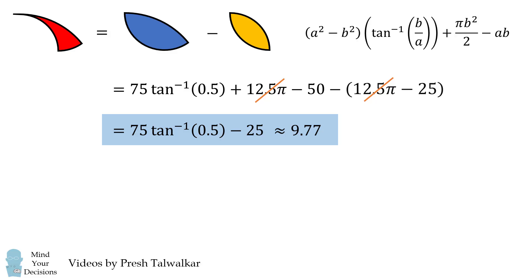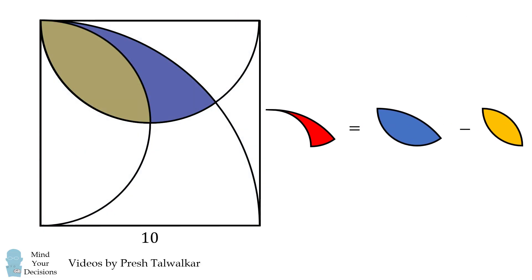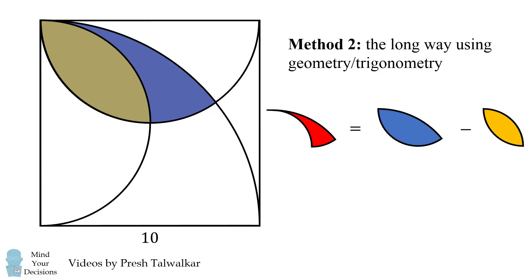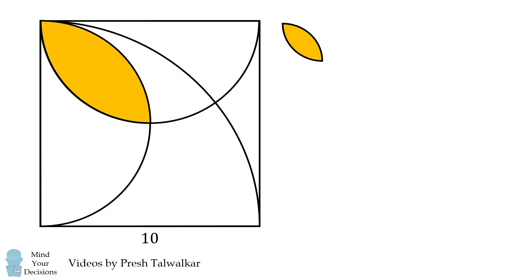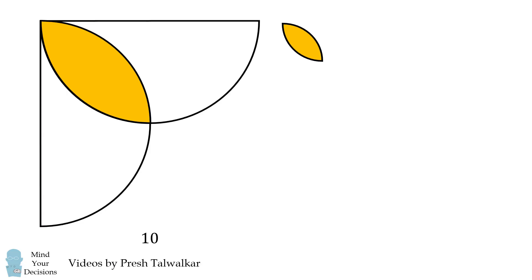But let's suppose you didn't realize you needed to calculate the area of a geometric lens — how would you solve the problem? Let's go over the longer geometric way. It's essentially the same method but it's useful to reinforce the steps. First, let's solve for the area of the yellow shape. Getting rid of irrelevant shapes, we'll draw a line down the middle dividing it into two equal circular segments, so we just need the area of one segment and multiply by 2.